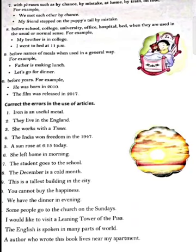And rule eight: before words like school, college, university, office, hospital, bed, when they are used in the usual or normal sense, we cannot use any article. Next: before names of meals when used in a general way, such as lunch and dinner, we should not use any article. And before years — for example: He was born in 2010, 2011, 2017 — in that case also, we cannot use any article.